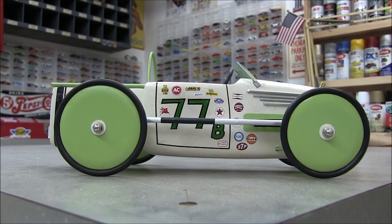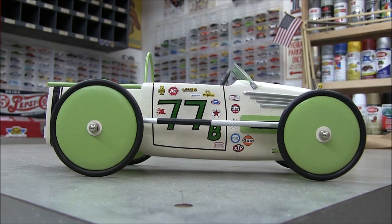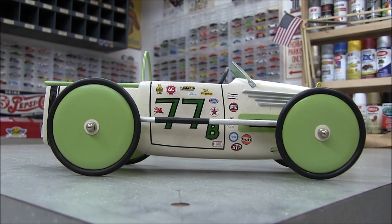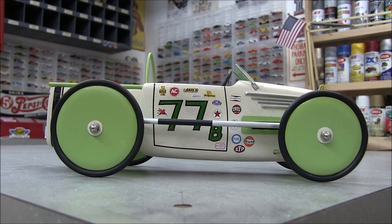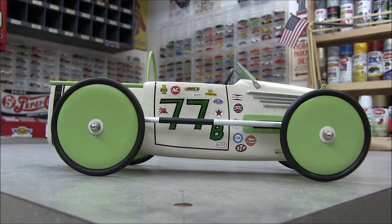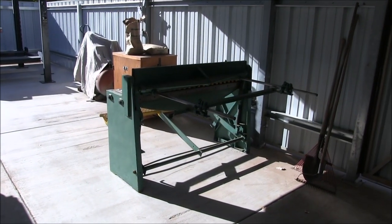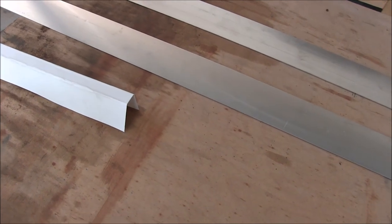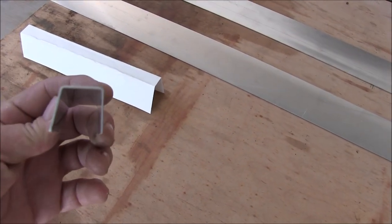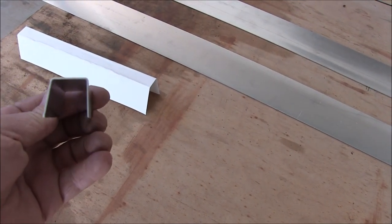How you doing everybody, welcome to video number four building the body on the 37 Studebaker modified. Alright, onward. Using the foot shear I sheared up some strips that I'm using to make the little channel pieces for the top rail.